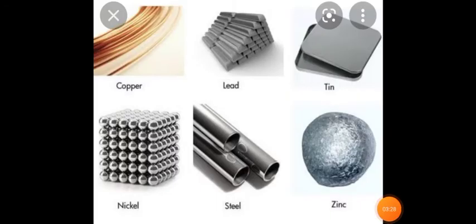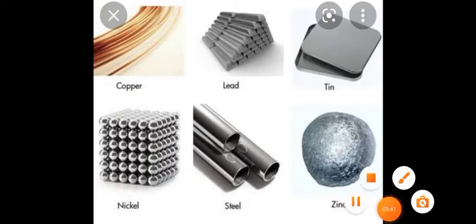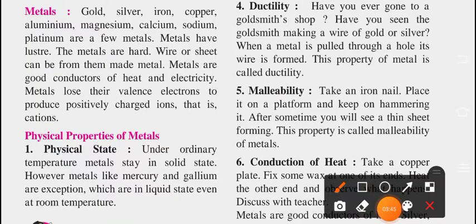Here are a few more examples of metals and how we use them: copper wires, nickel, steel pipes, tin, lead, and zinc. So to summarize, the metals are gold, silver, iron, copper, aluminium, magnesium, calcium, sodium, and platinum.